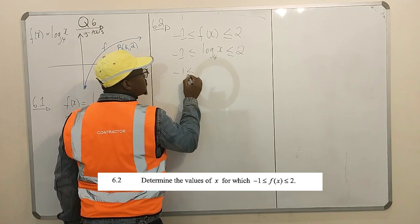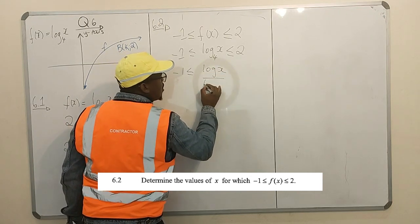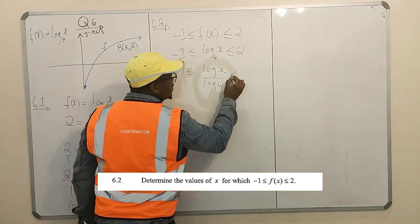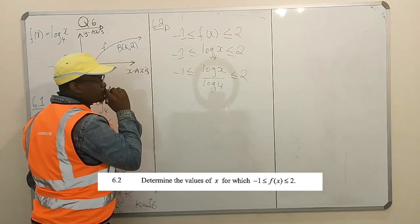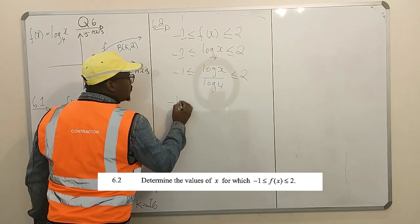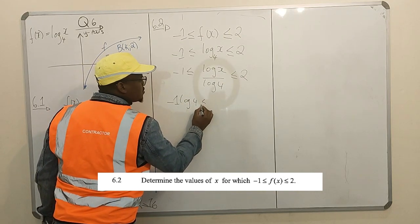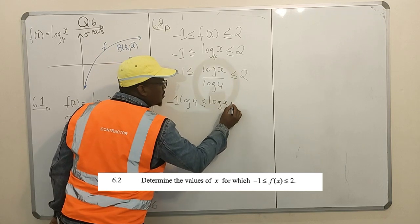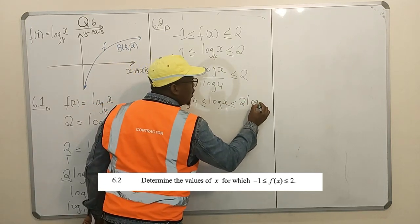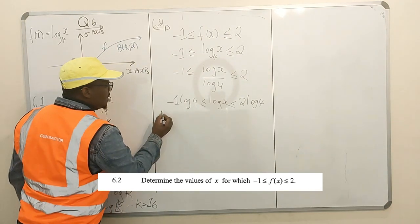This is -1 less than or equal to log x over log 4, less than or equal to 2. You multiply the two out by log 4. You have -1 log 4 less than or equal to log x, less than or equal to 2 log 4.